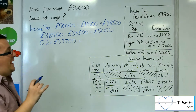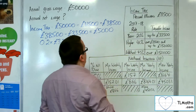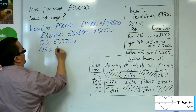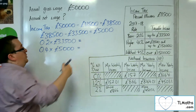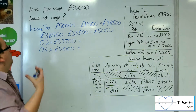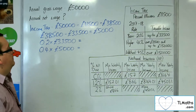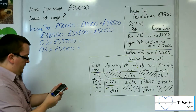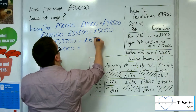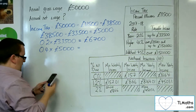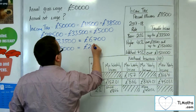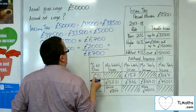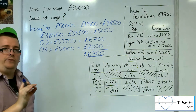And then 40% on any amount that's over — so it's 40% on the £5,000. Those two combined will give me the total income tax. So 0.2 times £33,500 is £6,700, and then 40% on the £5,000 is £2,000. These two added together give £8,700 as the total amount of income tax charged.